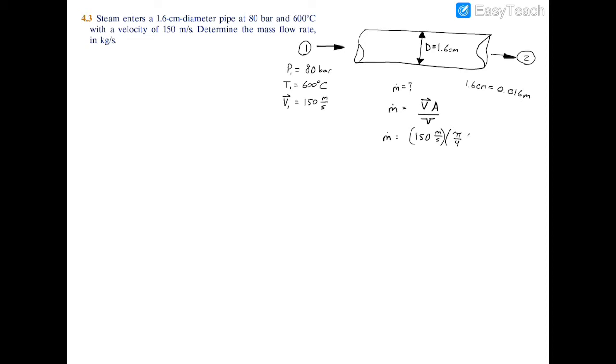So times d squared, 0.016 meters squared, and that's your area. You divide that by your specific volume, which is what we're about to look for.